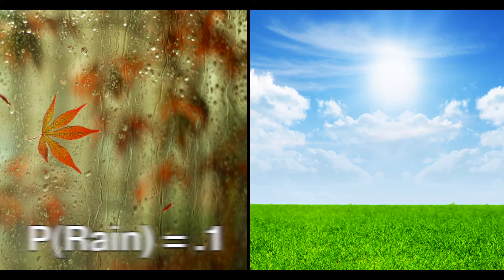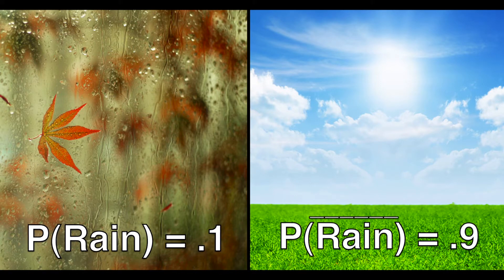For example, if the probability that it will rain tomorrow is 0.1, then the probability it will not rain is 0.9.